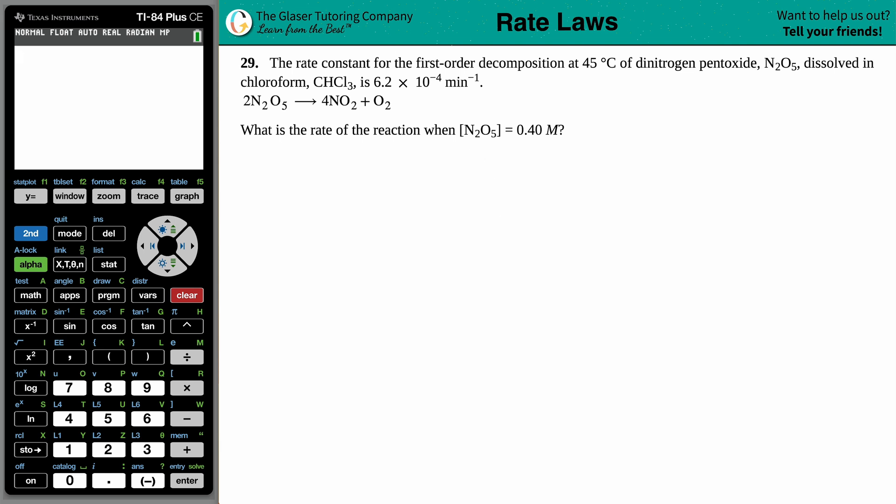Number 29: the rate constant for the first order decomposition at 45 degrees Celsius of dinitrogen pentoxide, N₂O₅, dissolved in chloroform, CHCl₃, is 6.2 times 10 to the negative fourth per minute. And then they give us a balanced equation: 2N₂O₅ yields 4NO₂ plus O₂.